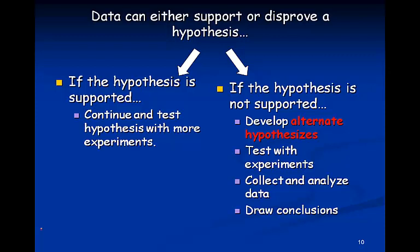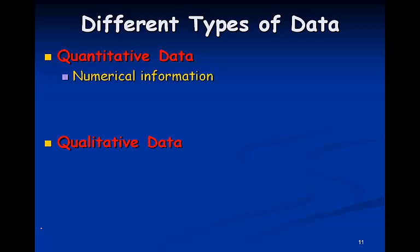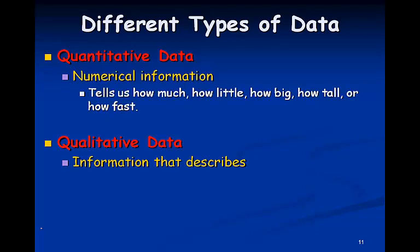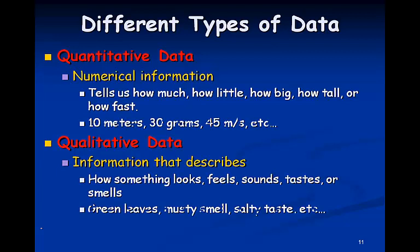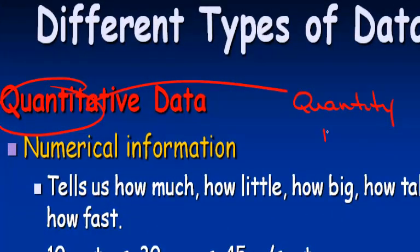Now, this data that we're collecting that we're going to use to support or disprove hypotheses can either be quantitative or qualitative data. Quantitative data is numerical information. It tells us how much, how big, how tall, how fast, things like 10 meters per second, 30 grams, 45 meters per second. Qualitative data, descriptive data, tells us how something looks, feels, sounds, or tastes. The way that I remember this is quantitative. We see quantity. It's a number.